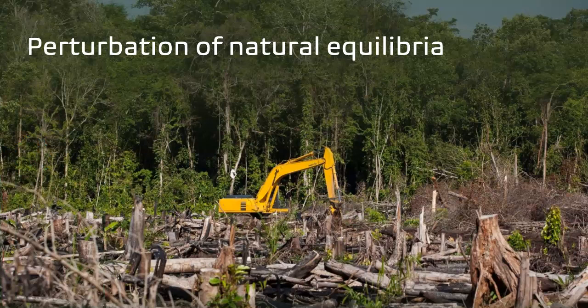Why has the prevalence of vectors increased in current times? One reason may be related to anthropogenic influences on the environment — increasing incidence of deforestation and perturbation of natural equilibria. This has disturbed the natural balance between the vector and the environment. For instance, some mosquitoes may be infected in the wild by fungi which are pathogenic to the mosquito. Elimination of forest habitat eliminates these fungi, leading to an overabundance of mosquitoes because of the loss of their natural pathogen.